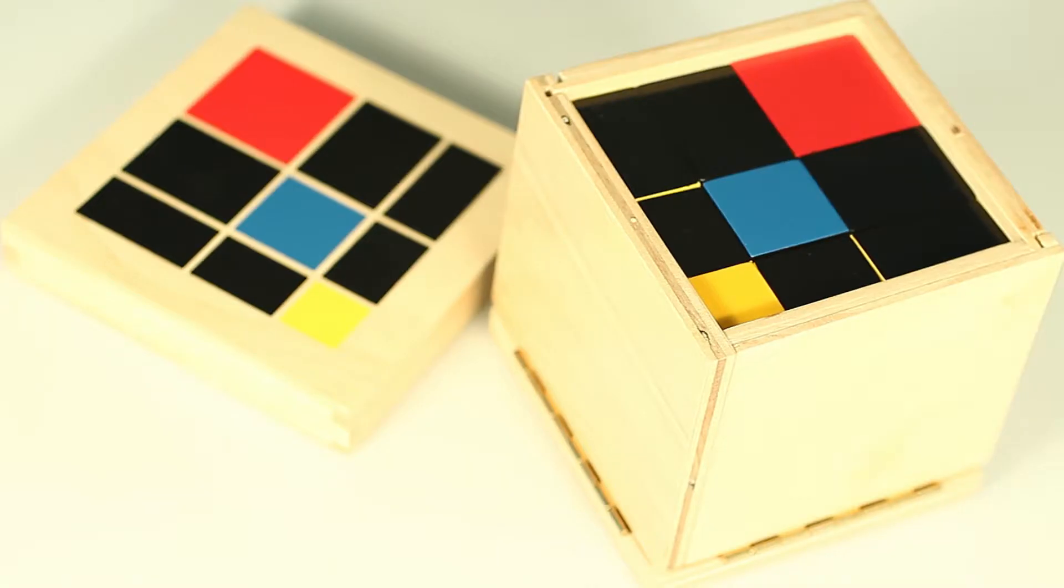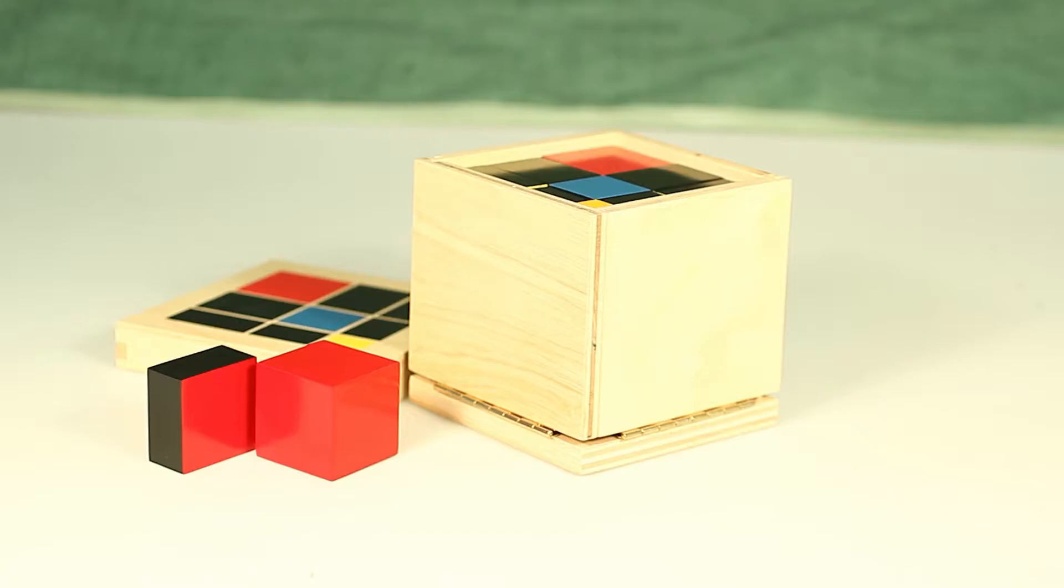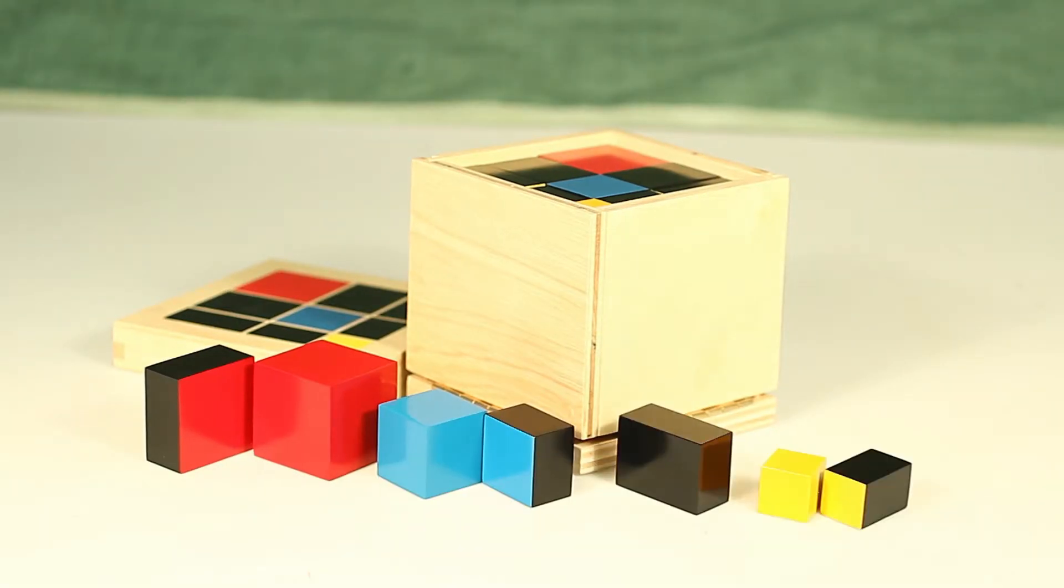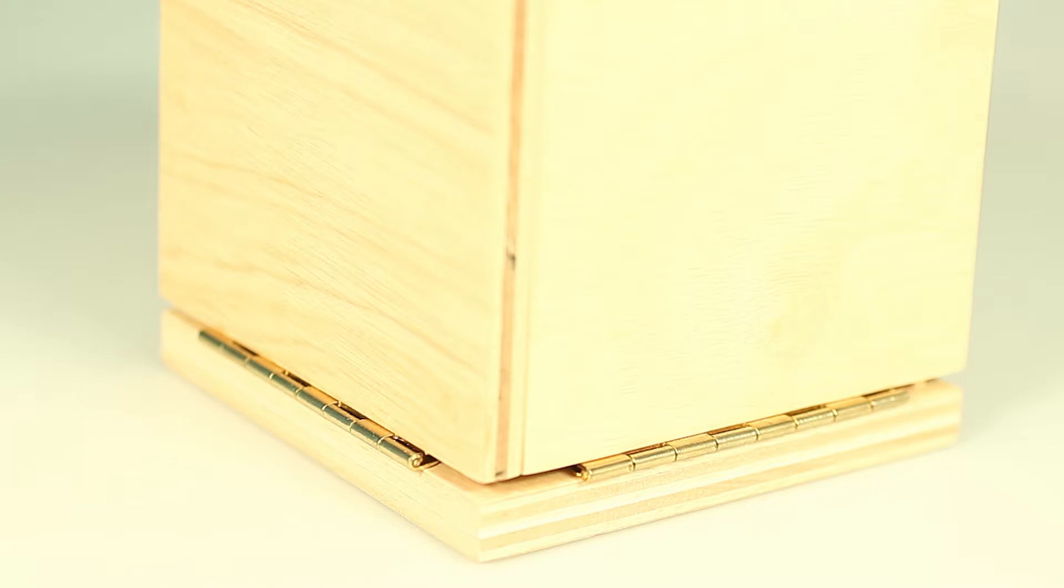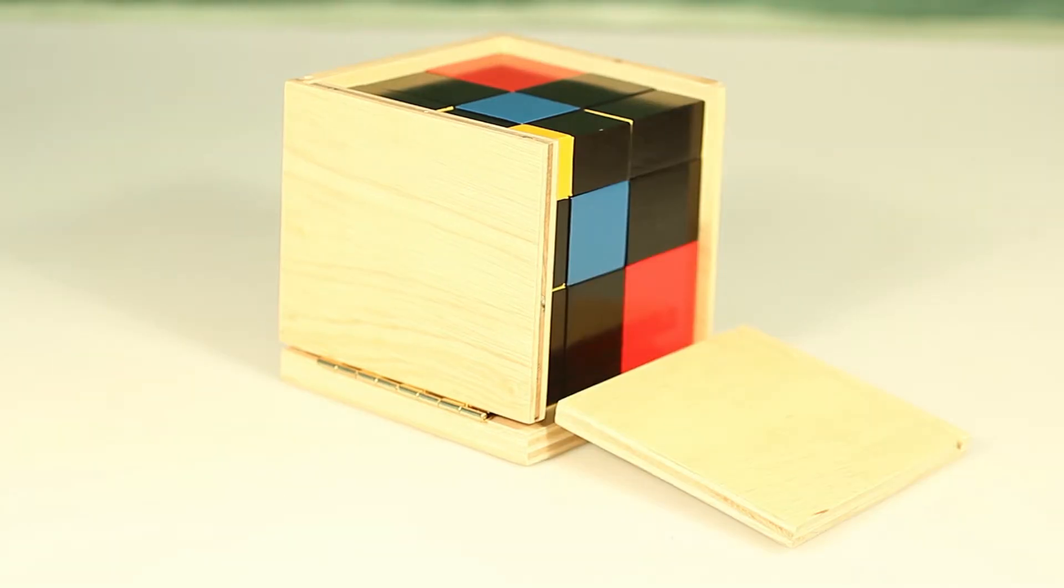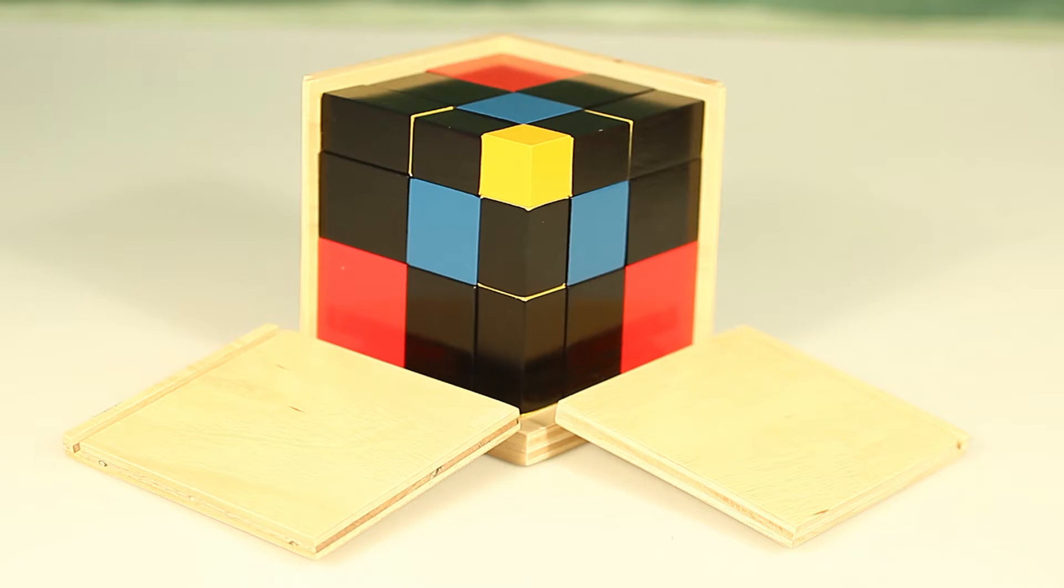The cubes come in a wooden box containing 27 wooden cubes painted red, blue, black, and yellow. The box has a special internal hinge which allows the sides to open out flat, permitting unhindered access to the cubes.